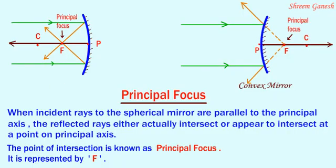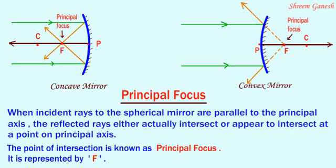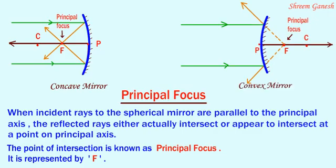Case 1: Concave mirror. When incident rays to the concave mirror are parallel to the principal axis, the reflected rays will actually intersect at the principal focus. Case 2: Convex mirror. When incident rays to the convex mirror are parallel to the principal axis, the reflected rays appear to intersect at the principal focus.